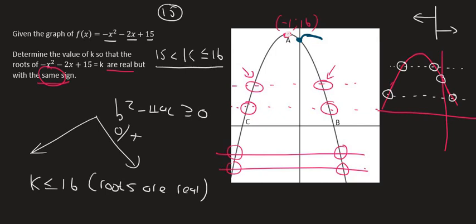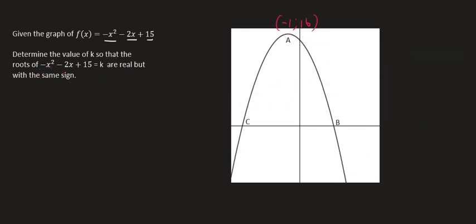So whenever you get a question where they say real, that can be solved mathematically. But when they say with the same sign, then you've got to start being careful because then you're going to have to make use of the graph. If you wanted the roots to be real but with different signs, well, then you would be interested in all of this beneath here.